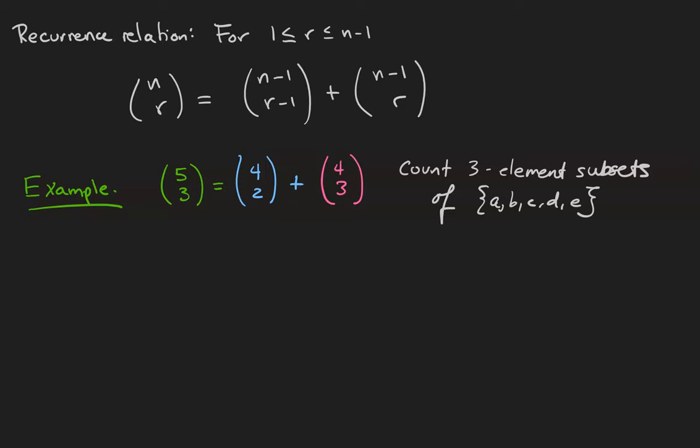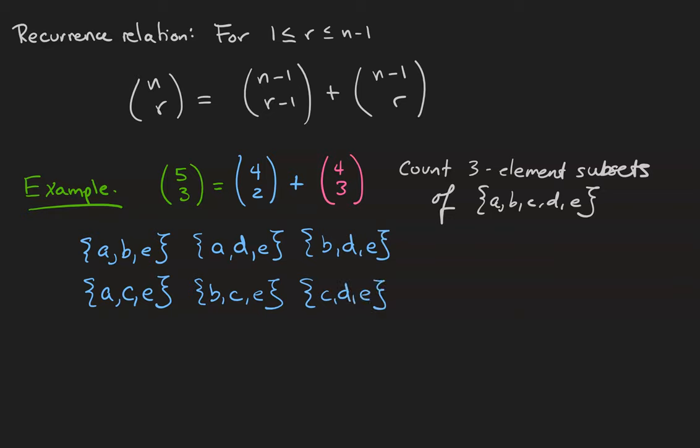I'm going to enumerate those subsets and lay them out in a certain way and see if you can figure out what the pattern is. We've got a, b, e, a, c, e, a, d, e, b, c, e, b, d, e, and c, d, e. We've also got a, b, c, a, b, d, a, c, d, and b, c, d.